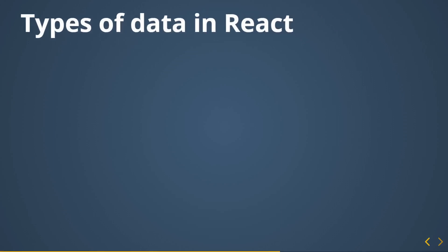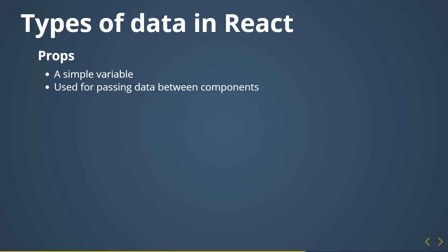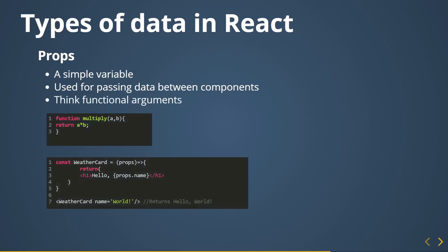What is that props thing? It falls under the types of data in React. Generally speaking, React deals with two types of data. First is props — think of props as the arguments you pass to your functions. They are simple variables, nothing special about them. They are used for passing data between components. The data structure is quite limited, so everything is clear when you read the code — it's not spaghetti.